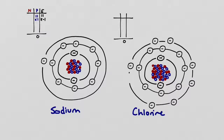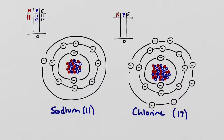Let's see what happens if we put this sodium atom in the same vicinity as a chlorine atom. These two atoms look almost exactly the same — the only difference is the number of neutrons, protons, and electrons each one has. Sodium has an atomic number of 11, and chlorine has an atomic number of 17, meaning it has 17 neutrons, 17 protons, and 17 electrons. Since protons and electrons balance one another out, the chlorine atom also has a charge of zero.